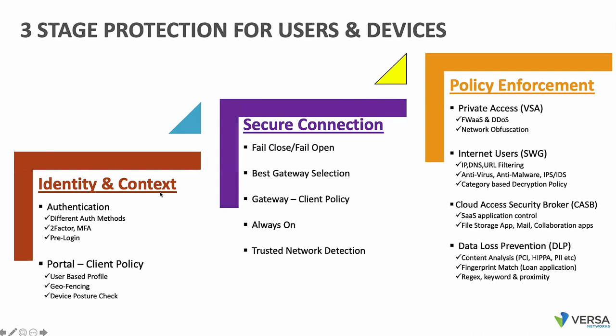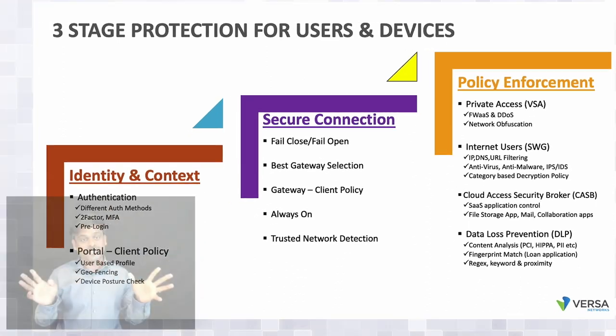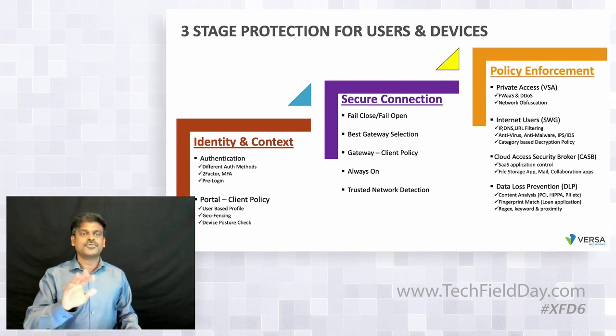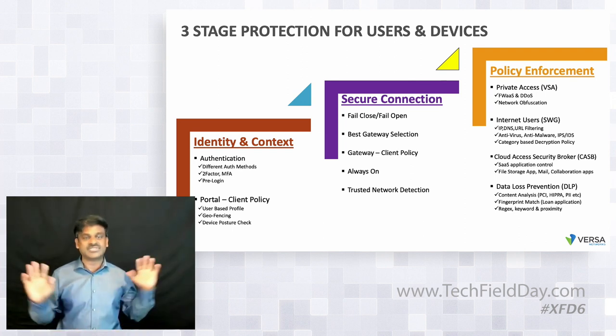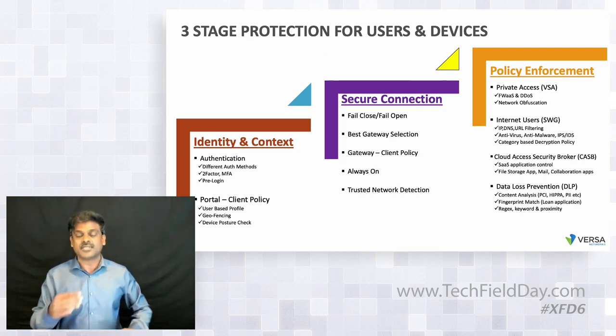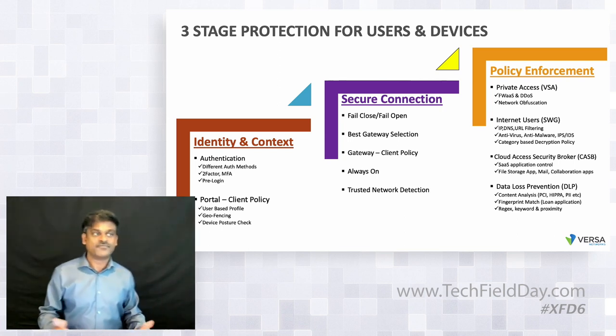Trusted network detection is an important differentiator, especially since Versa provides SASE both on-premises via secure SD-WAN devices and remotely. When a user is connecting from a branch office, there's no need to create an extra tunnel — the SD-WAN device already has a secure connection to the SASE gateway. The gateway detects the trusted location and instructs the client not to create an additional tunnel. The user connects transparently through the LAN underlay to the SASE gateway, getting the appropriate protection without any manual action.